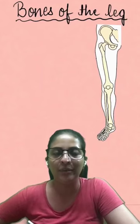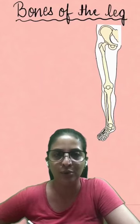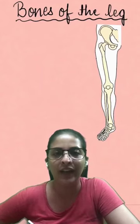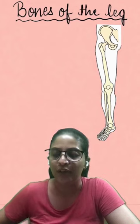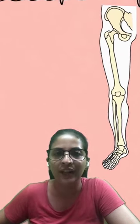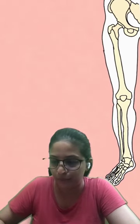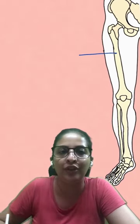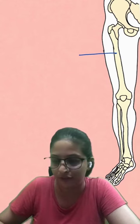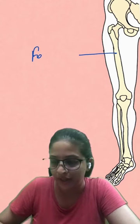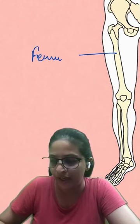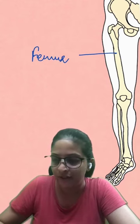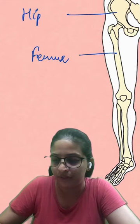Hey everyone, this is your Shruti ma'am and today we are going to talk about the bones of the leg and the foot. So if you see this diagram here, the first bone, the longest one which is known as femur, is joined with the hip bone.